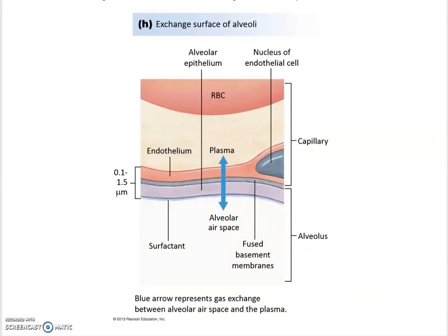Gas exchange across the surface of an alveolus requires a minimal diffusion distance. From the alveolar airspace, gases must cross into the plasma of the blood — and with a red blood cell visible here, you can see that the diffusion distance is only about one micrometer in thickness.